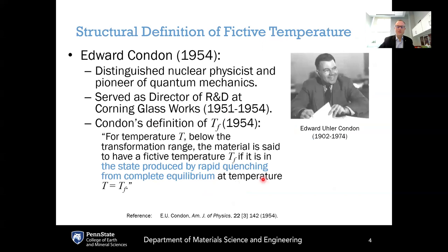The first scientist who connected fictive temperature back to glass structure was Edward Condon — most well known for his work in quantum mechanics, including the Condon-Morse curve, a distinguished nuclear physicist and pioneer of quantum mechanics. He had a brief stint at Corning Glassworks where he served as director of research and development from 1951 to 1954.